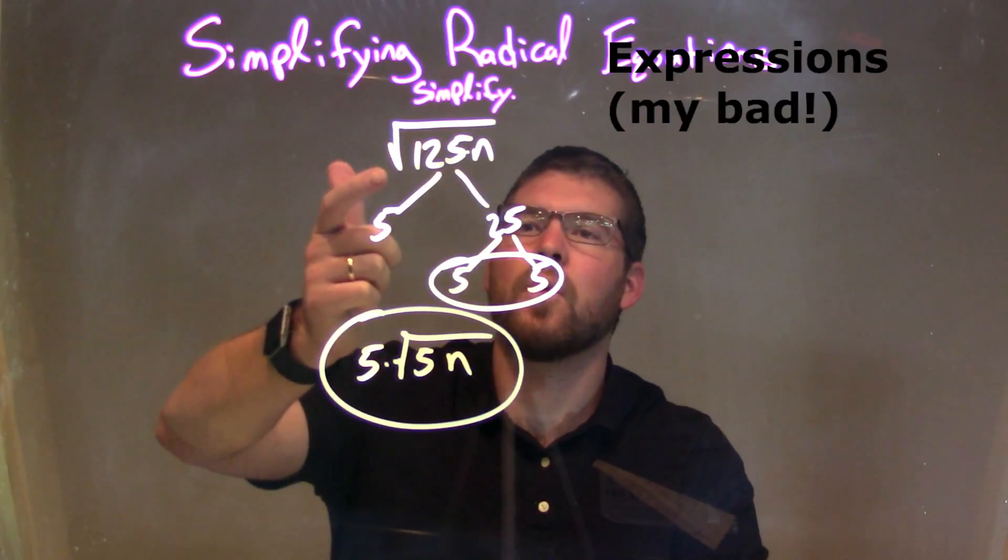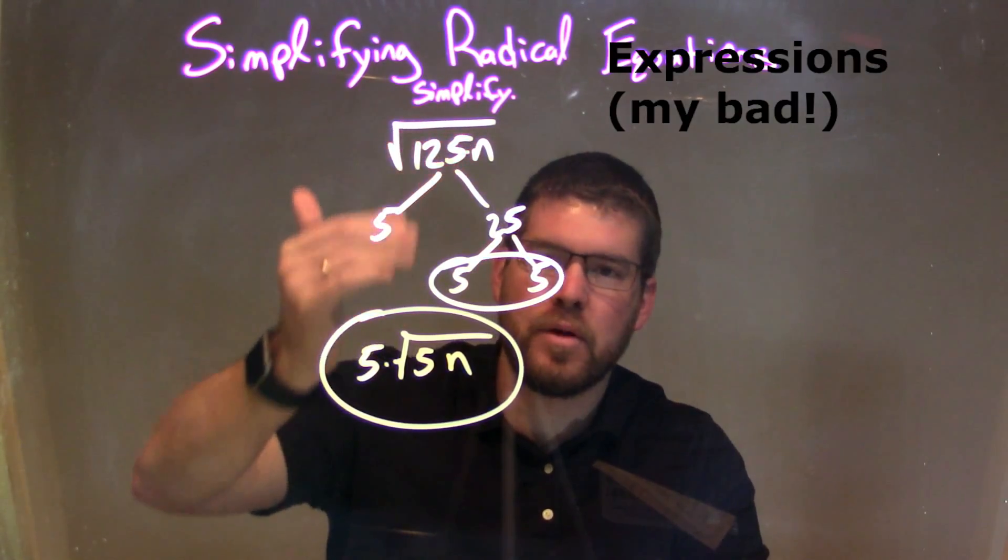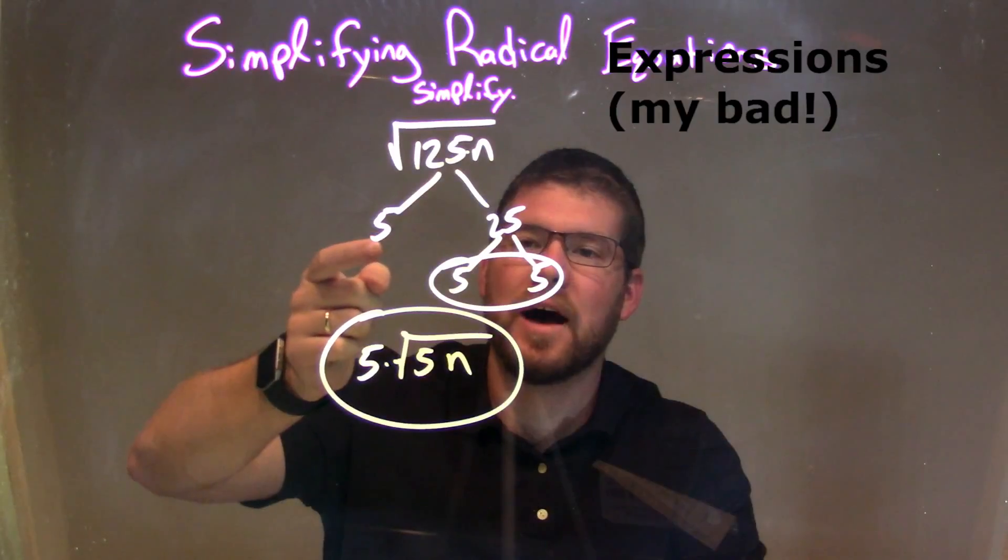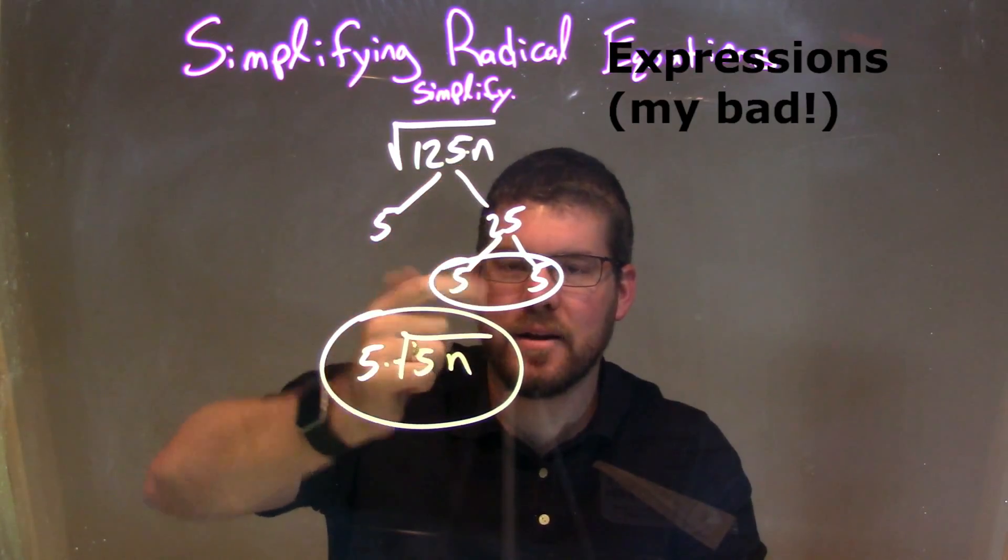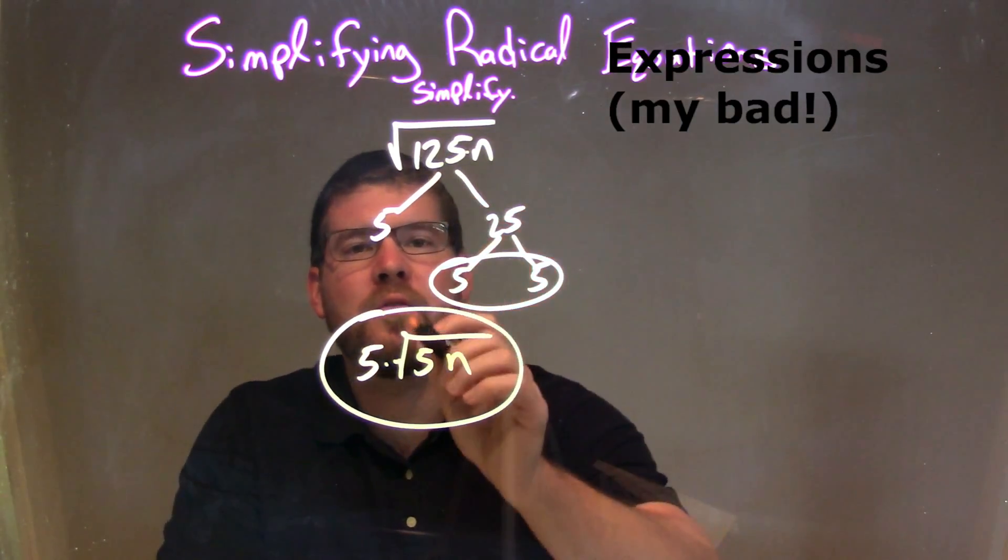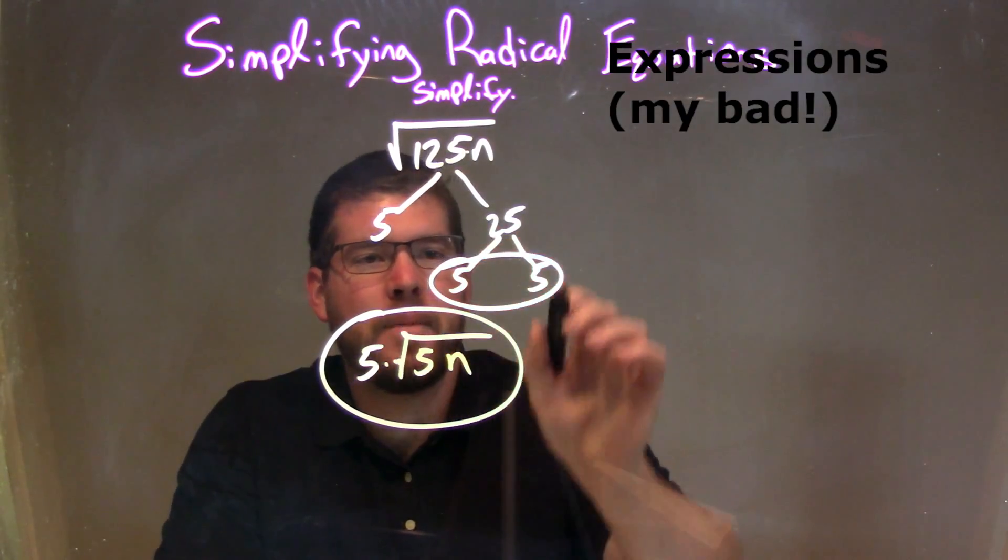So let's recap. We're given the square root of 125n, and I do my prime factorization of 125. That's 5 times 5 times 5. We break it all down. So 125 is the same thing as 5 times 5 times 5. I find my pairs.